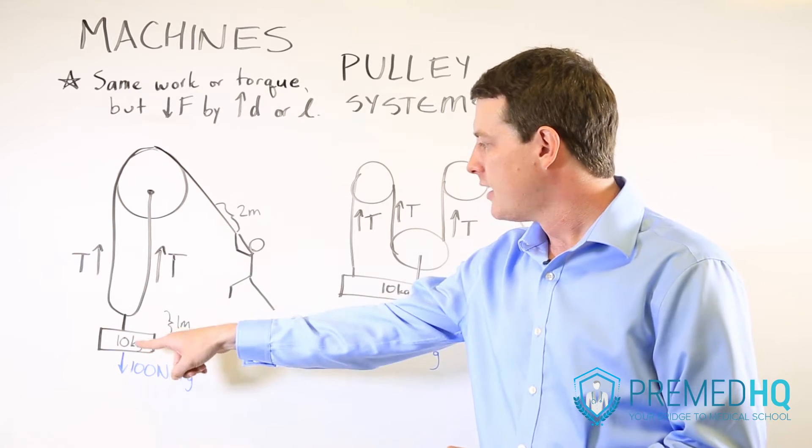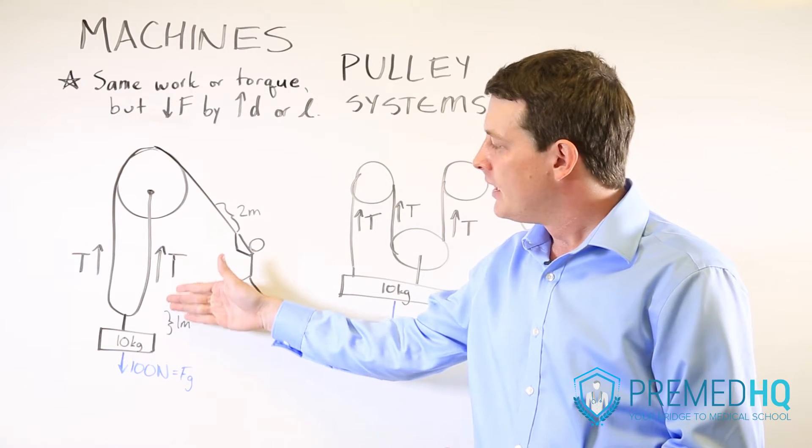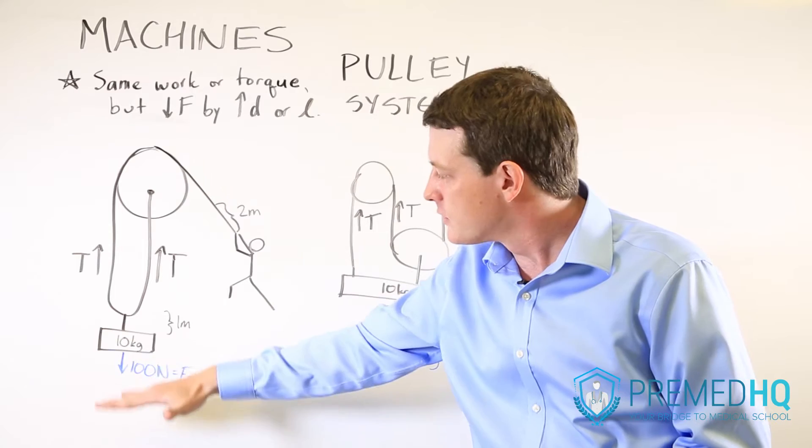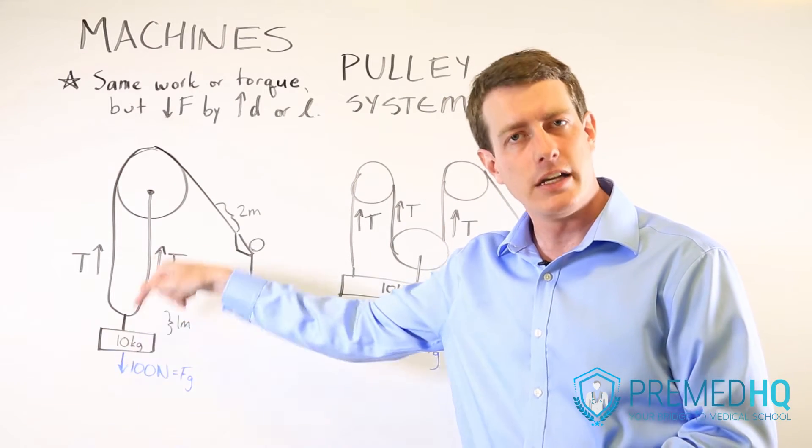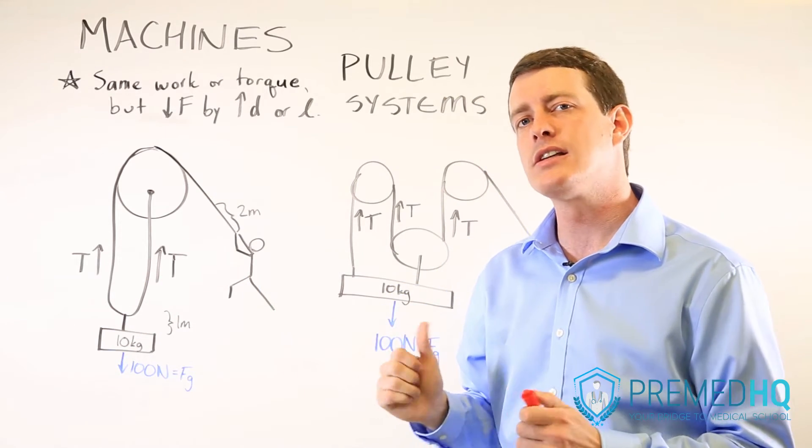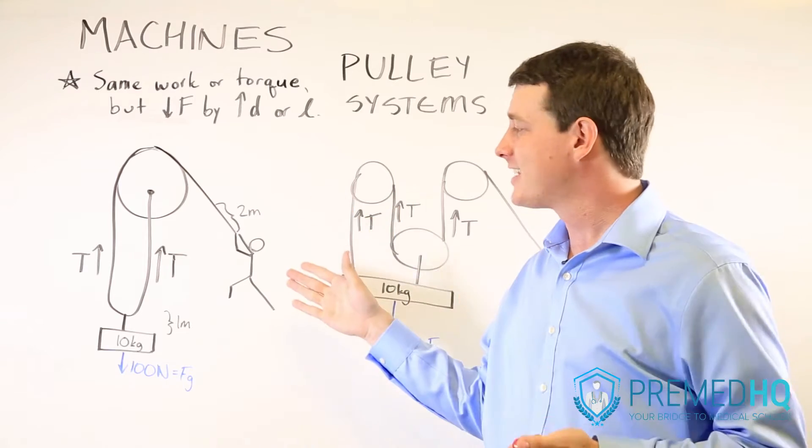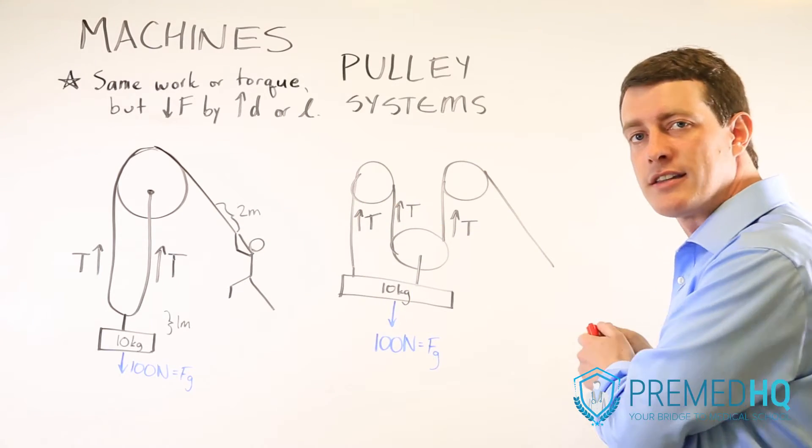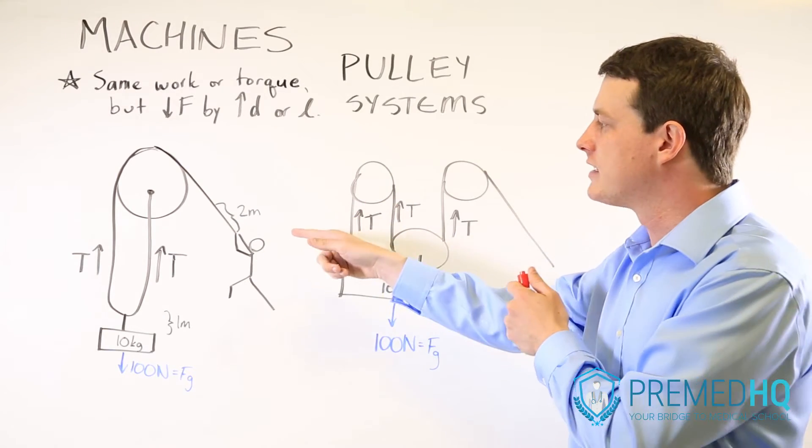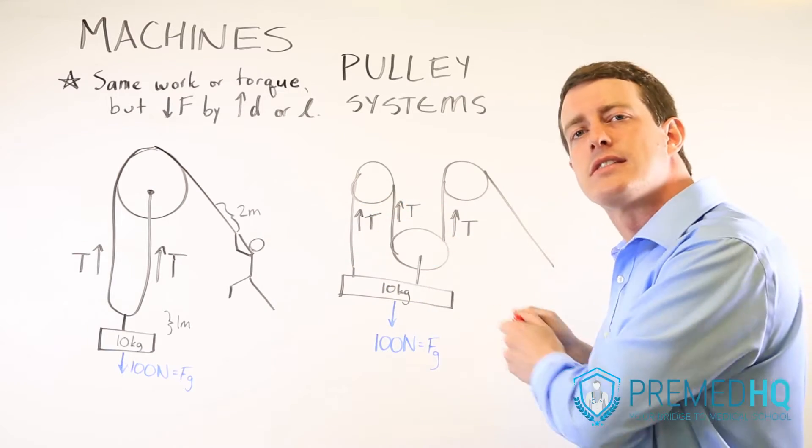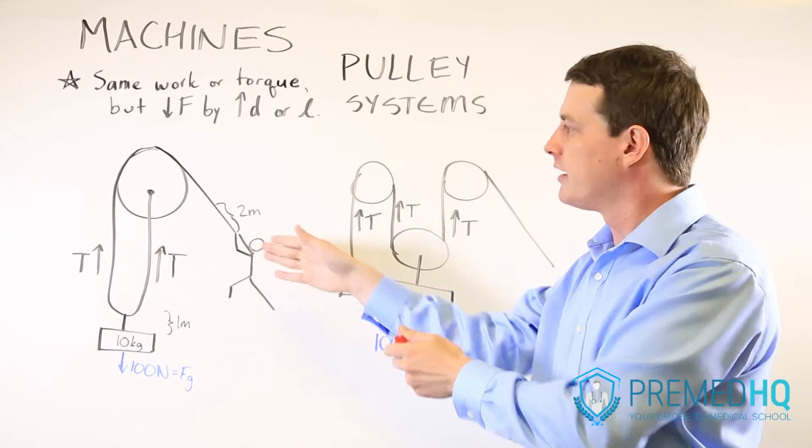For example, in this particular system, the weight of this brick, this 10 kilogram brick, is pulling down, and so tension exists to pull up. At the same time, this person who's pulling on the system, the tension will exist to resist the force that he is putting on this rope here.